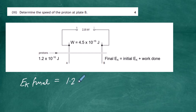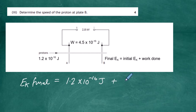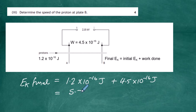The final kinetic energy at B equals the original kinetic energy of 1.2×10⁻¹⁶ joules plus the work done by the electric field of 4.5×10⁻¹⁶ joules. Adding these together gives a total kinetic energy of 5.7×10⁻¹⁶ joules — that is the complete kinetic energy the proton has when it reaches plate B.